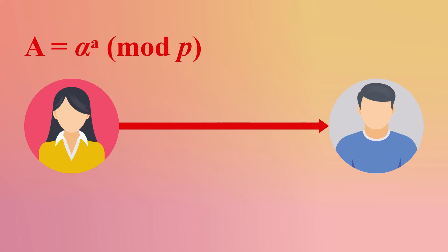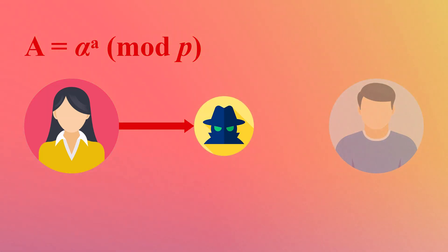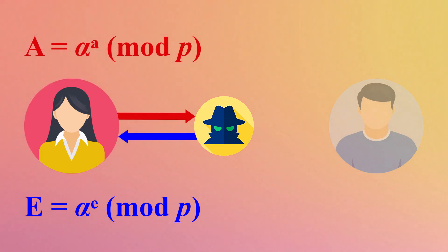The process begins when Alice calculates her public value A and sends it to Bob. However, Eve intercepts this message. Eve creates her own public value E and sends it to Alice, pretending to be Bob.